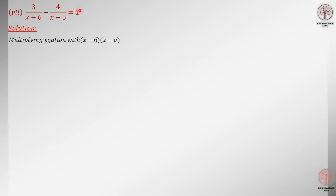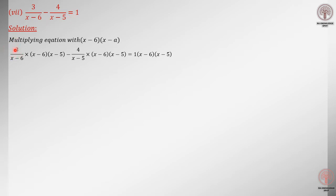You can see the method: we multiply the whole equation — this is called an equation because it has an equals sign — with (x minus 6) and (x minus 5). This is called the LCM of the two fractions. We are going to multiply the whole equation with the LCM, which is (x minus 6) and (x minus 5).